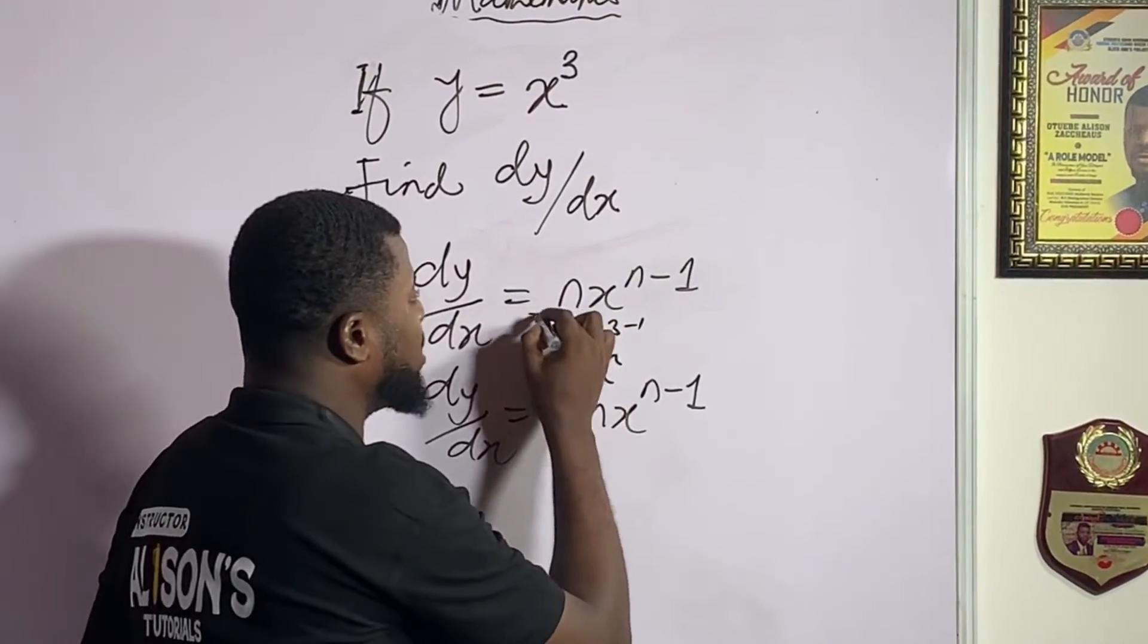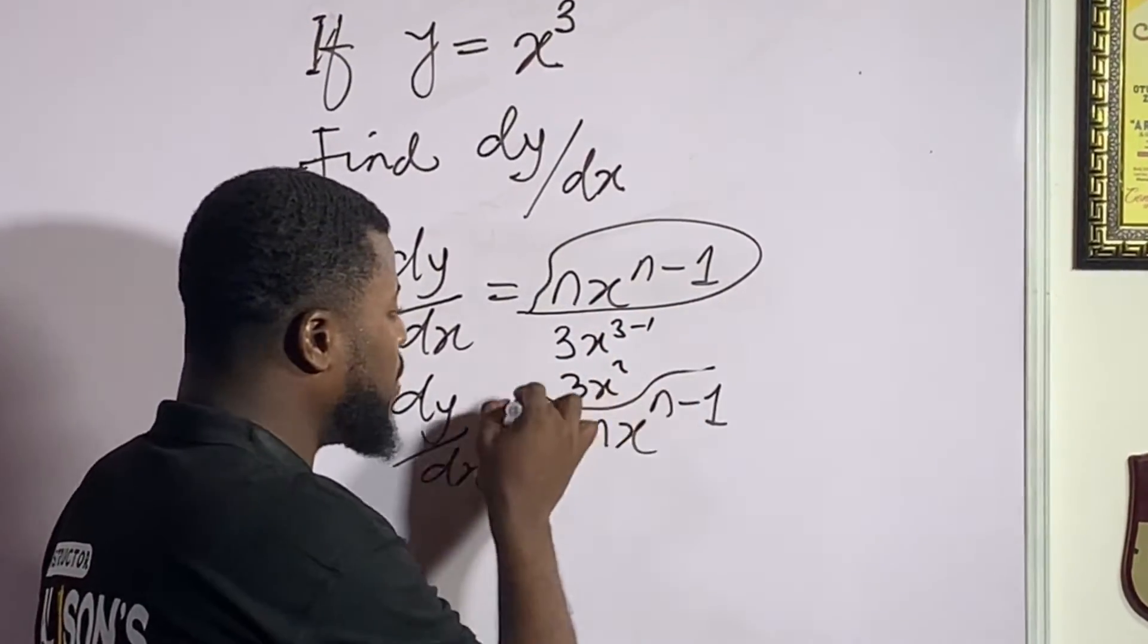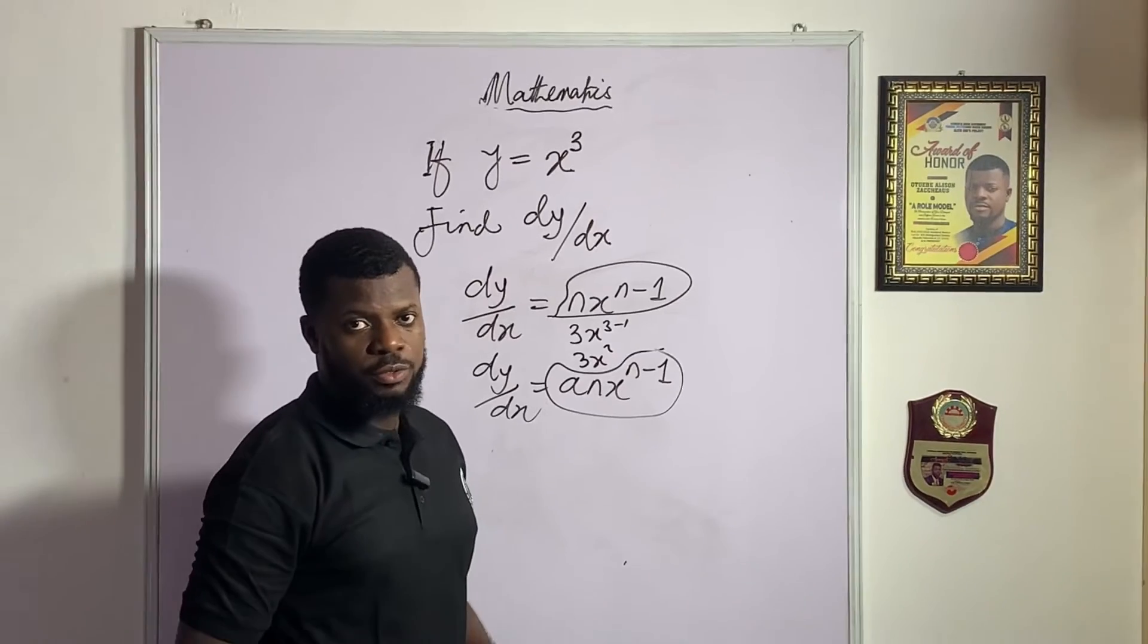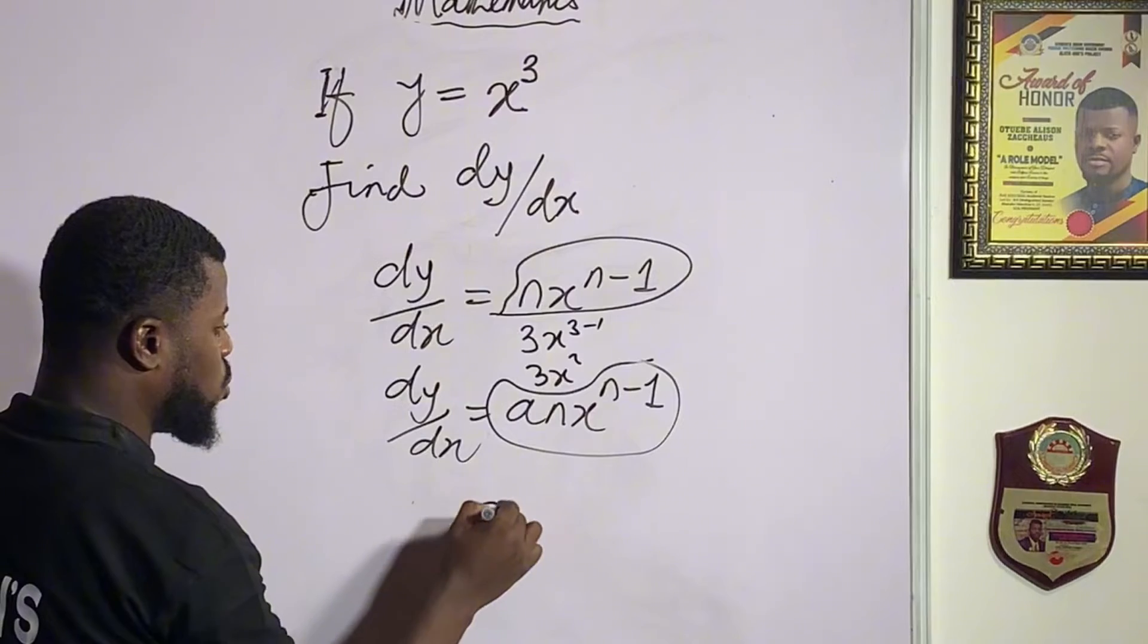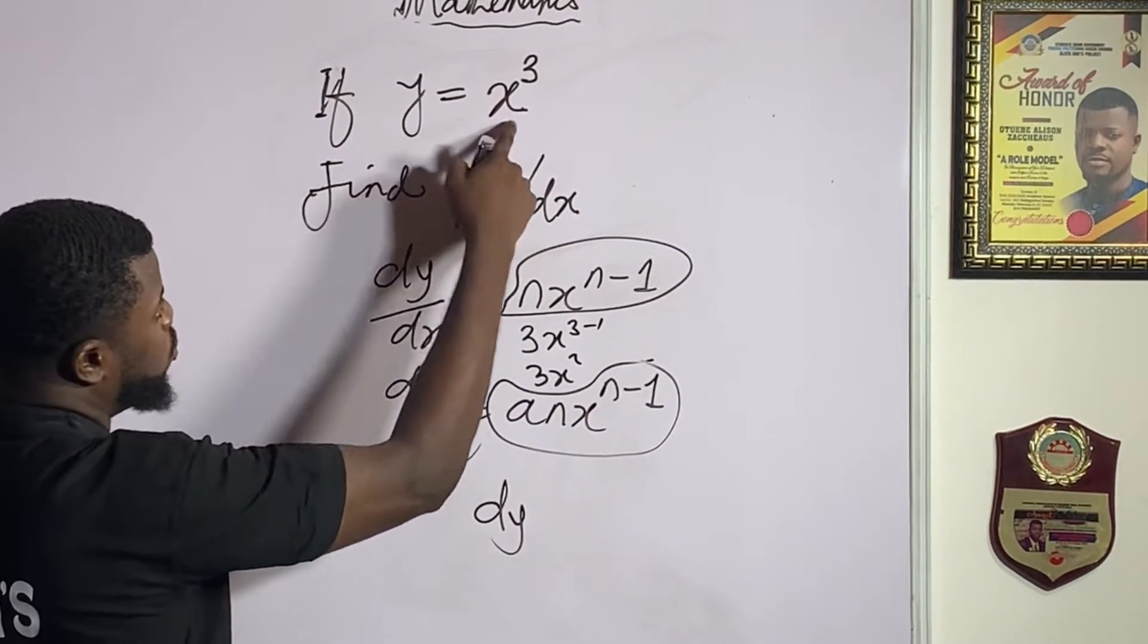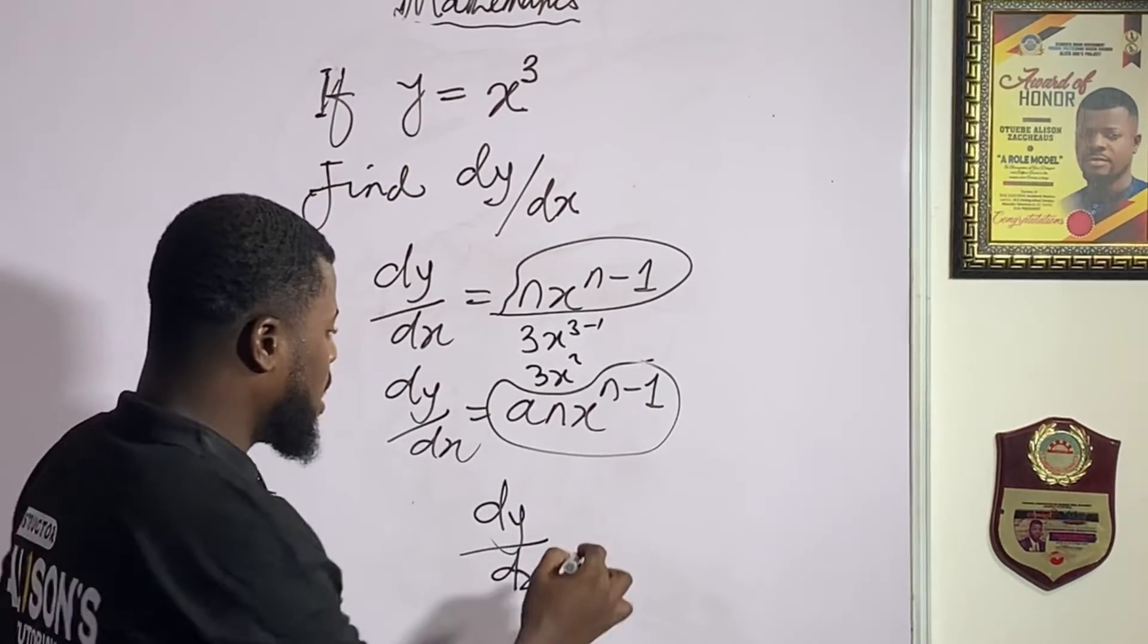So you just need to remember this formula. If you remember this formula, it can be able to solve any problem on differentiation. So in order to solve this problem, we want to look for the derivative of this y, differentiating this y with respect to x. That is what they call dy over dx.